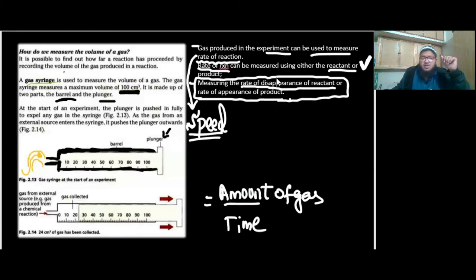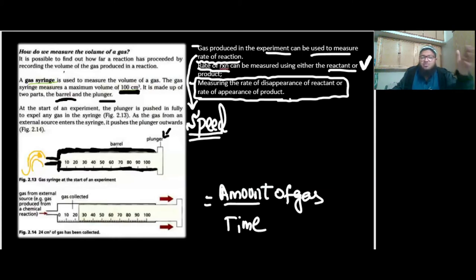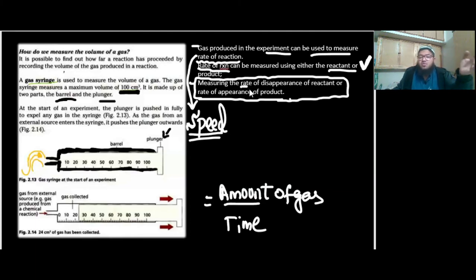You will need this throughout your O levels and A levels. It will keep coming again and again, even in your math and further math when you have derivative questions — questions of derivatives and differentiation. There too you find rate questions and you'll know what rate means with respect to time. So this pretty much sums it up.